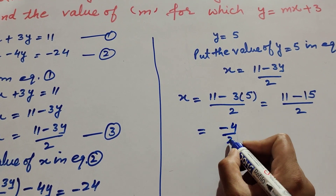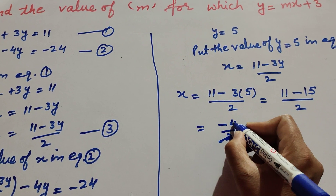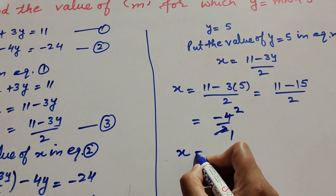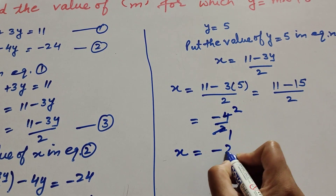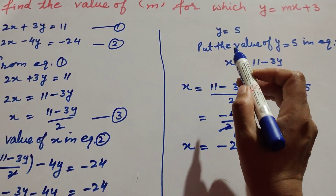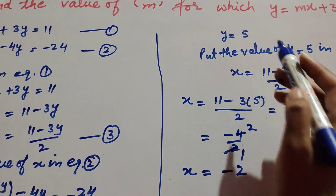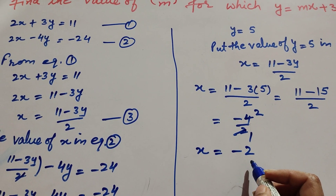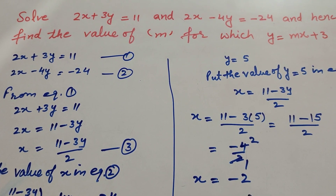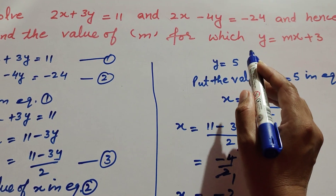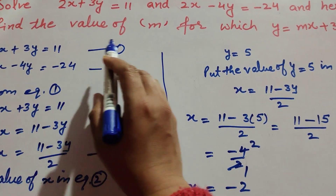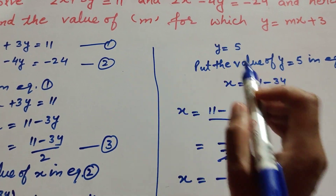Since 4 and 2 are both divisible by 2, we cancel them: two twos are 4, so x equal to minus 2. We now have x equal to minus 2 and y equal to 5. Now in the question, y equal to mx plus 3, we find the value of m.